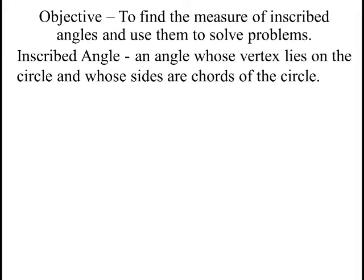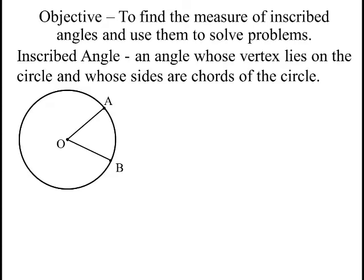What is an inscribed angle? Well, it's an angle whose vertex lies on the circle. Now, we've talked about central angles before - that's where the vertex lies in the center of the circle. Angle AOB is the central angle, and if that's 60 degrees, then you know the arc AB is also 60 degrees.